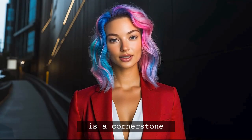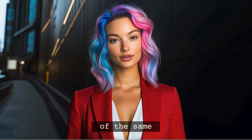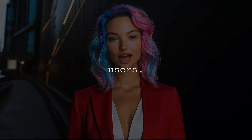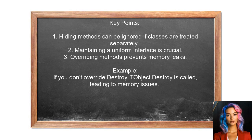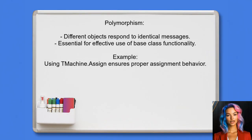Did you know that the concept of polymorphism is one of the cornerstones of object-oriented programming? It allows different classes to be treated as instances of the same class through a common interface. Looking at answers from other users: while hiding a virtual method can be ignored if you treat classes separately, it can lead to issues with maintaining a uniform interface. Overriding methods correctly ensures the correct base class methods are called, preventing potential memory leaks, and allows different objects to respond to the same method call.